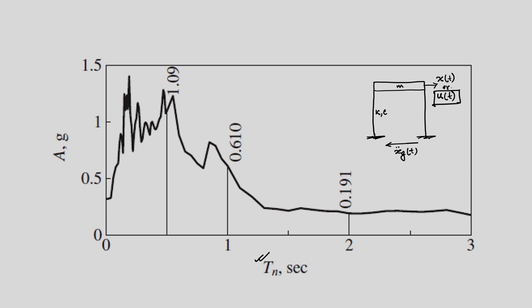Why do we do that? As a designer, what are the parameters that worry us? It is actually the base shear. The base shear can act both ways because we have a dynamic system. We call it V_B, and then we have a moment M_B.